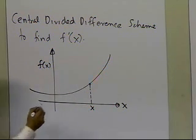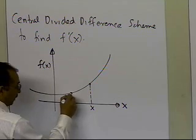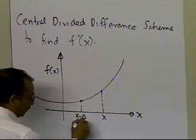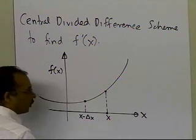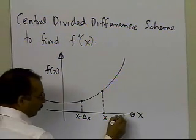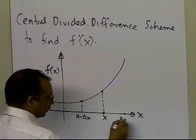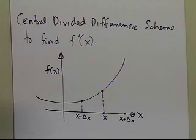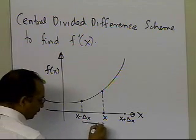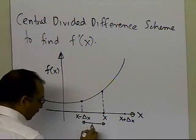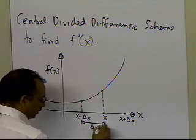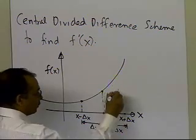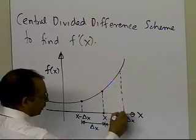In the central divided difference scheme, what you're going to do is take a point which is Δx to the left of the point at which you want to find the derivative of the function. You're also going to take a point which is x plus Δx — so it is Δx to the right of x. The distance between the two points from x is the same, so this distance is Δx, and this distance is also Δx. So we take the value of the function at both points.